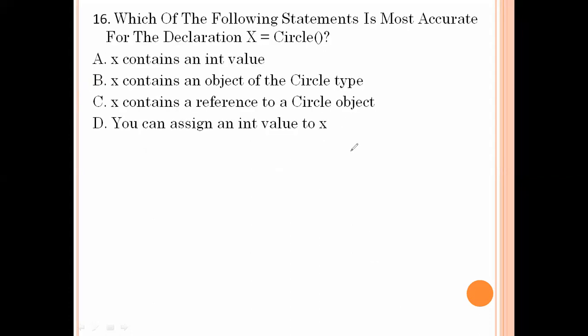Which of the following statements is most accurate for the declaration x = circle? x equal to any int value is wrong. x equal to an object of the circle type is also wrong. x equal to a reference to a circle object — this is the right answer. Option number C.